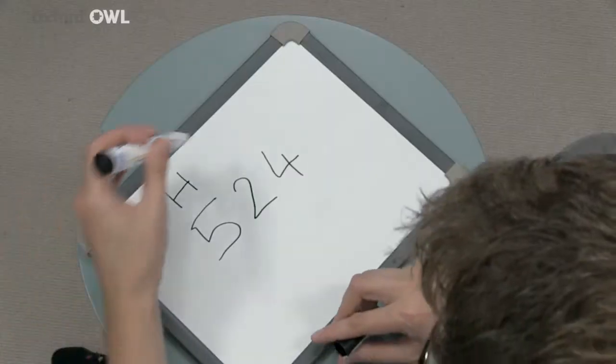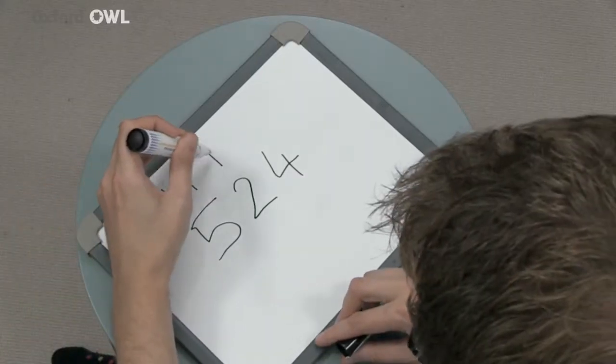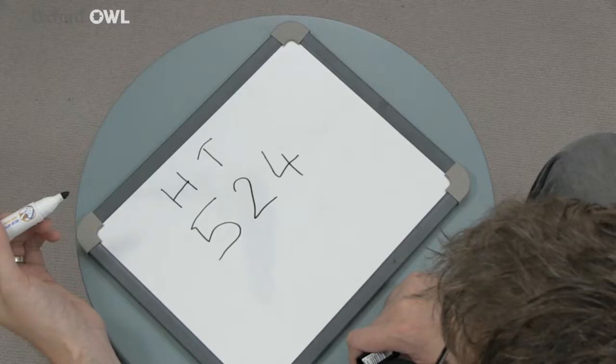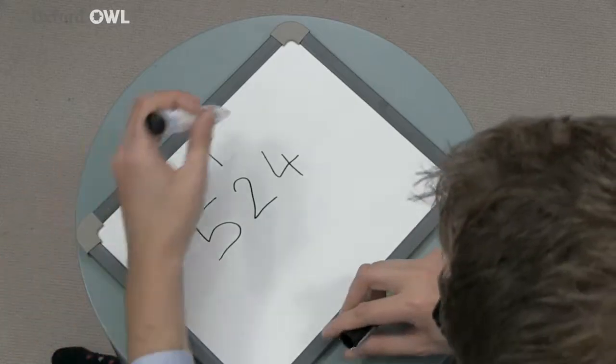The digit 2 is in the tens place, which means it has a value of 2 lots of 10 — 20. And the digit 4 is in the ones place, which means it has a value of 4 lots of 1 — 4.